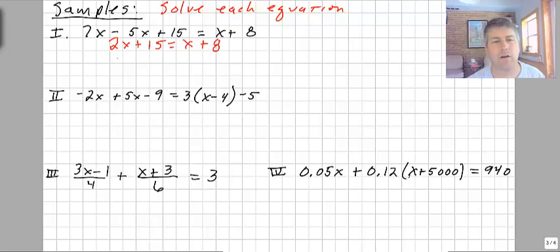Both sides are simplified. Now I want to gather all my x's on one side. So I'm going to move this 1x and subtract that from both sides. So now I get x plus 15 equals 8. I'm close to having x all by itself. Simply subtract 15 from both sides. X equals whatever 8 minus 15 is. X is negative 7. That's the solution to our equation.